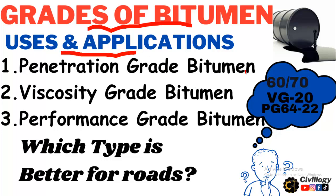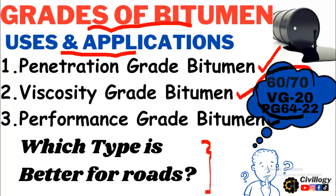There are different systems of gradations, namely penetration grade bitumen, viscosity grade bitumen, and performance grade bitumen. These gradings are represented by different figures. So what does 60/70 mean? What is VG20 and PG64-22? We will discuss these one by one and also discuss which type of bitumen is better for roads and under what conditions.